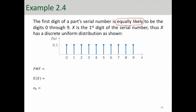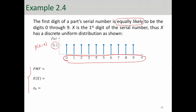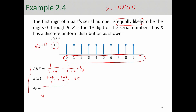This is why it's called uniform — you can see it's uniformly distributed between 0 and 9. On the y-axis is f(x), which is essentially the probability of X being equal to any value in the range 0 to 9. The PMF is 1 over (b − a + 1) = 1 over (9 − 0 + 1) = 1/10. The expected value is (a + b) / 2, and the standard deviation is 2.87.